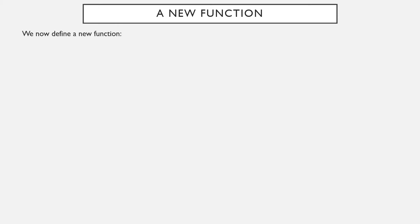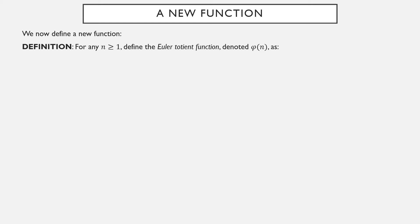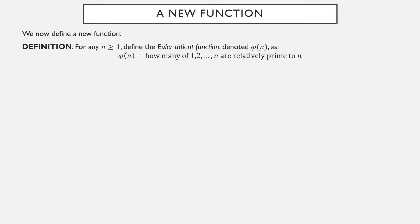Now we're going to define a new function. For any n ≥ 1, we define the Euler-Totient function, and we use this symbol here — the Greek letter φ (phi). In the UK it's pronounced 'fee', in Greece it's pronounced 'fi', and in the US we pronounce it 'fye'. So this is φ(n), and we compute it as: out of the numbers 1 through n, how many of them are relatively prime to n? You list out all the numbers 1 through n and ask how many are relatively prime to that number n — however many that is, that's the value φ(n).